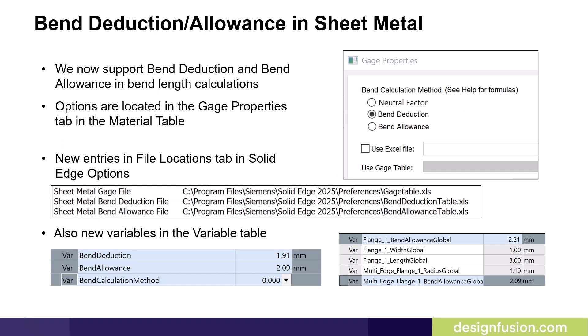Solid Edge 2025 now supports bend deduction and bend allowance in bend length calculations. New entries have also been added to the file locations tab in the Solid Edge options dialog so users can define the location of bend calculation specific Excel tables. New variables have also been added to the variable table representing these values, providing users with three bend calculation methods in Solid Edge 2025.